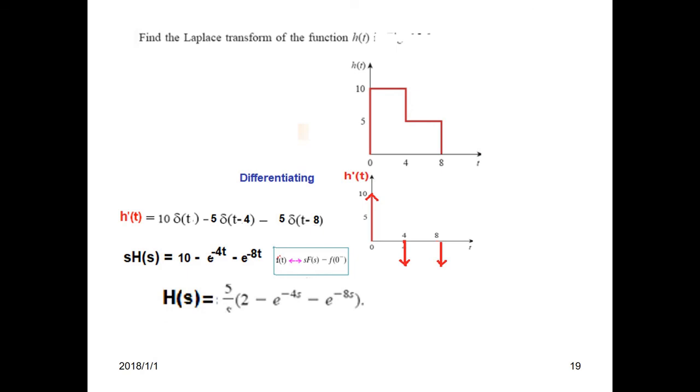If we take 5 common, then 2 remains here. So this is 2e^(-4s) - e^(-8s), and dividing by s, we get H(s) = (5/s)[2e^(-4s) - e^(-8s)]. So this is the answer.